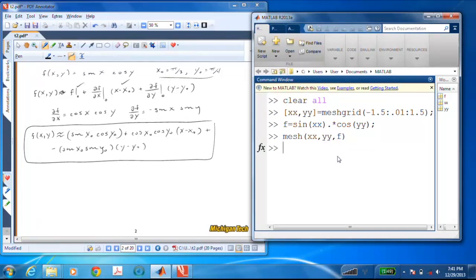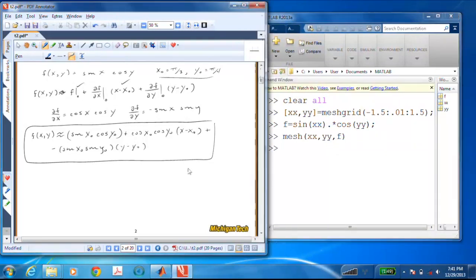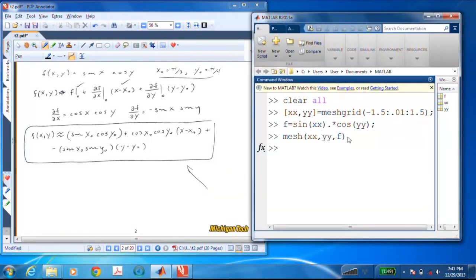I'll call that f1. And to do that, I'm going to have to implement this equation into MATLAB. And if I stare at it a minute, I believe I can do that fairly easily. So I'm going to say x0 equals π/3, that's our x0 point, and y0 is equal to π/4.